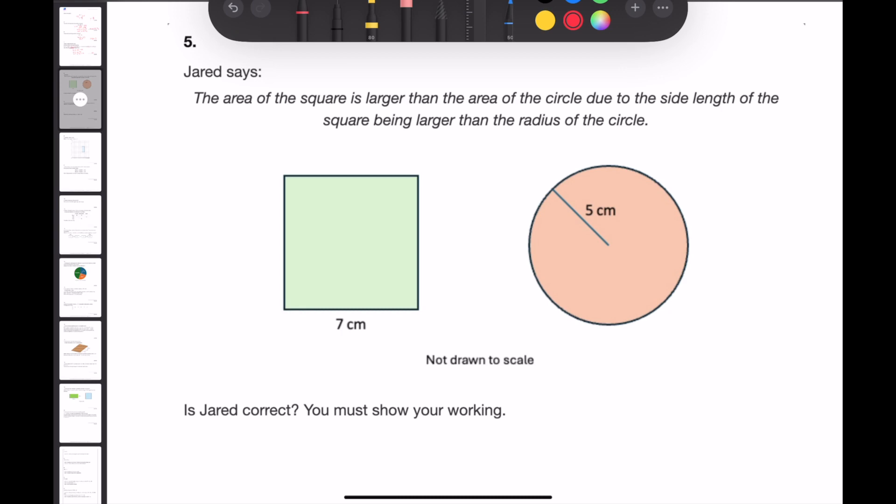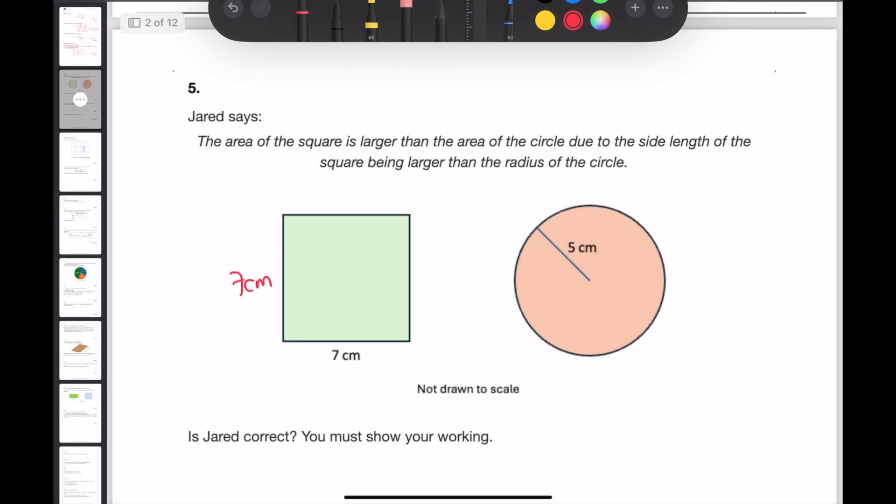Question 5. Jared says, the area of the square is larger than the area of the circle, due to the side length of the square being larger than the radius of the circle. Is Jared correct? To work out the area of the square, we multiply the base times by the height. So 7 times 7 is 49 centimeters squared.